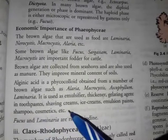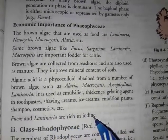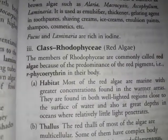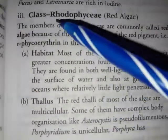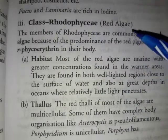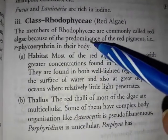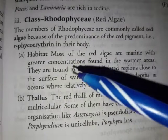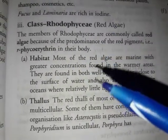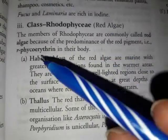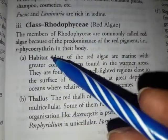Fucus and Laminaria are rich in iodine. Now coming to the last class — Rhodophyceae, the red algae. They appear red because of the pigment r-phycoerythrin, which is a red pigment.